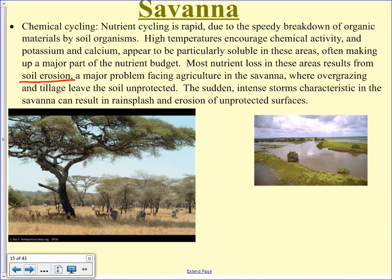Chemical cycling in the savanna is rapid because there's a fairly good amount of moisture and lots of decomposing organisms, and high temperatures also help. Most nutrient loss has to do with erosion and floodwaters. Sudden intense storms can result in rain splash erosion of unprotected surfaces — those first drops are so big and heavy they cause almost a cratering effect and soil sprays up into the air.